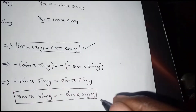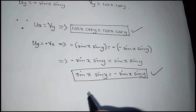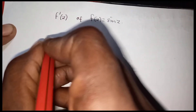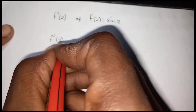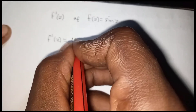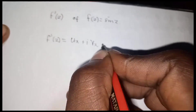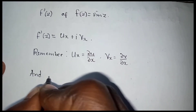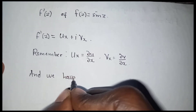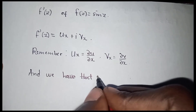Since both conditions are satisfied, the function is analytic. Now let us find the derivative of f(z). We know it is given by the partial of u with respect to x, plus i times the partial of v with respect to x. We already have both of those partial derivatives.